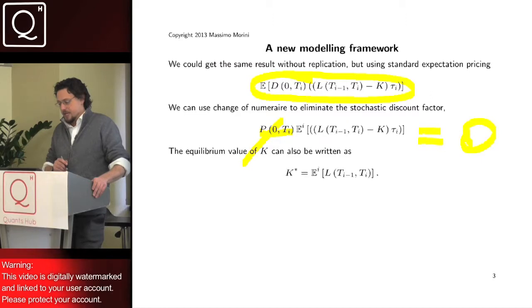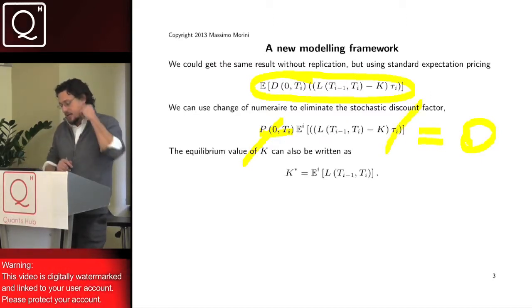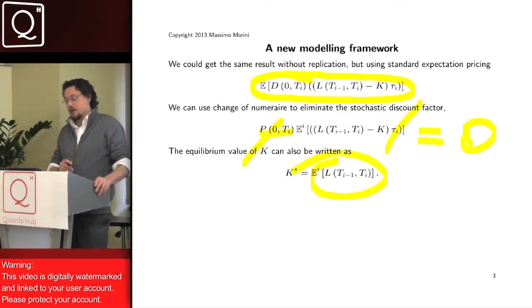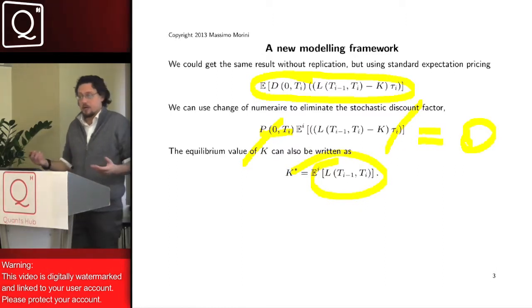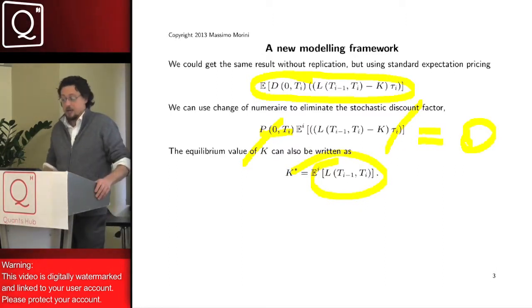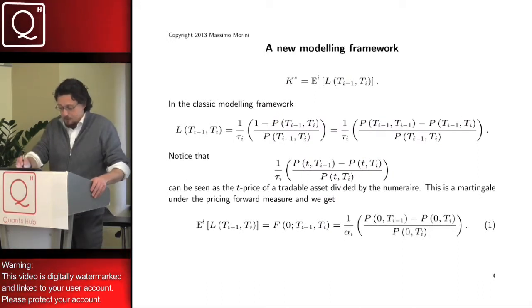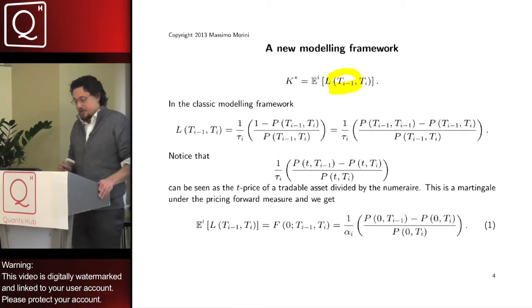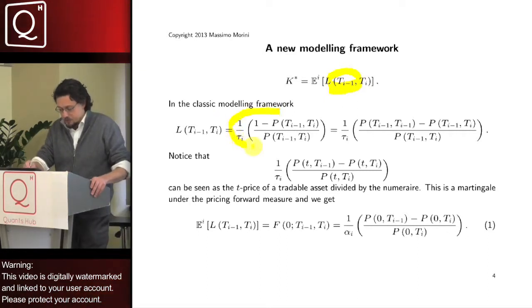You erase P and you erase tau I and you realize that the equilibrium level of K is just expectation under the T_I forward measure of the future LIBOR rate that appears in the payoff. But now, if you remember that the future LIBOR rate can be written in terms of bond in this way...